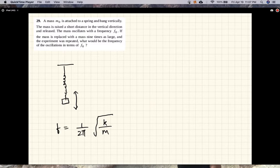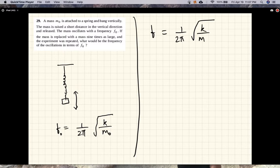...is the frequency with the mass M₀, and f would be the frequency with the spring constant being the same but with a new mass M. Now if the new mass is nine times M₀, so this is square...